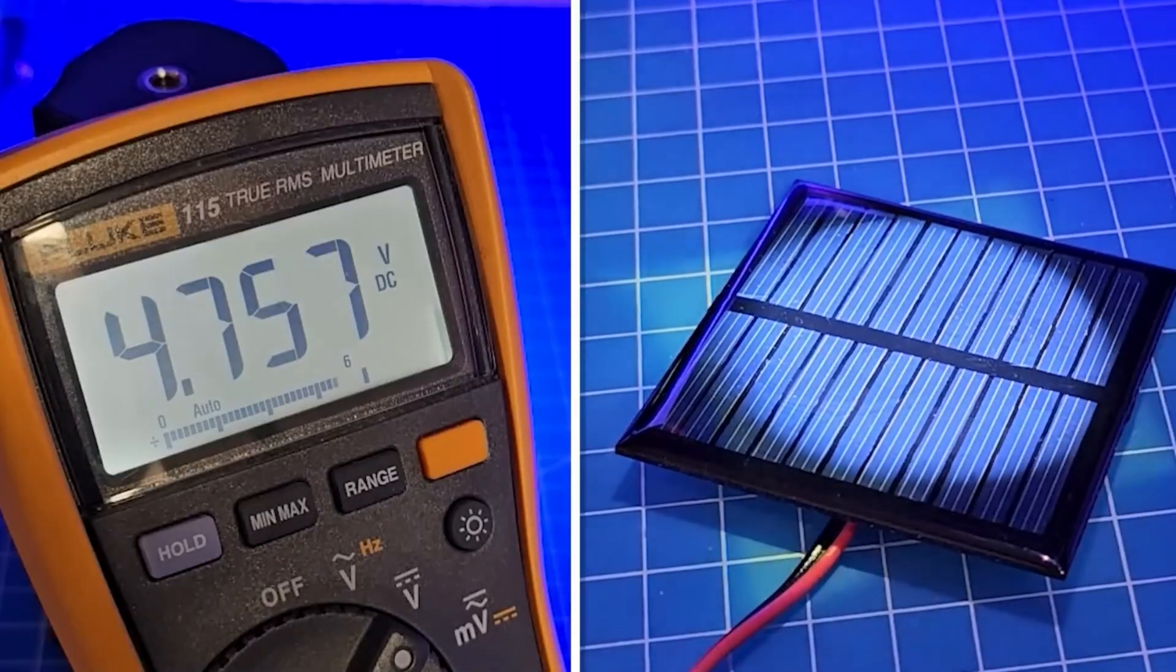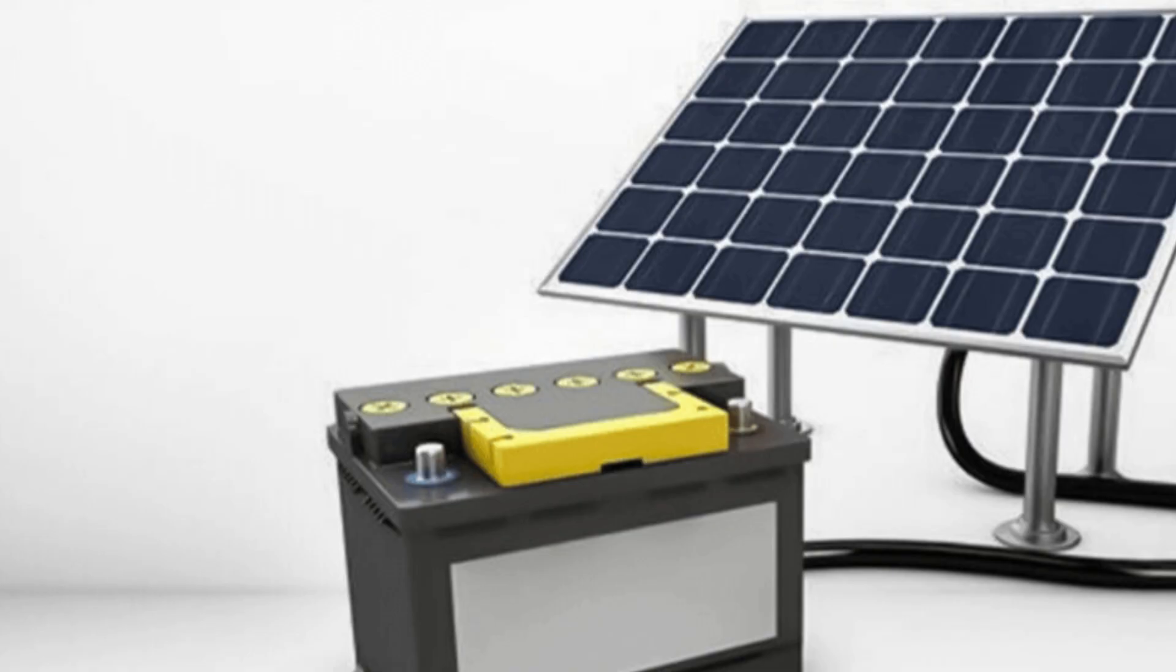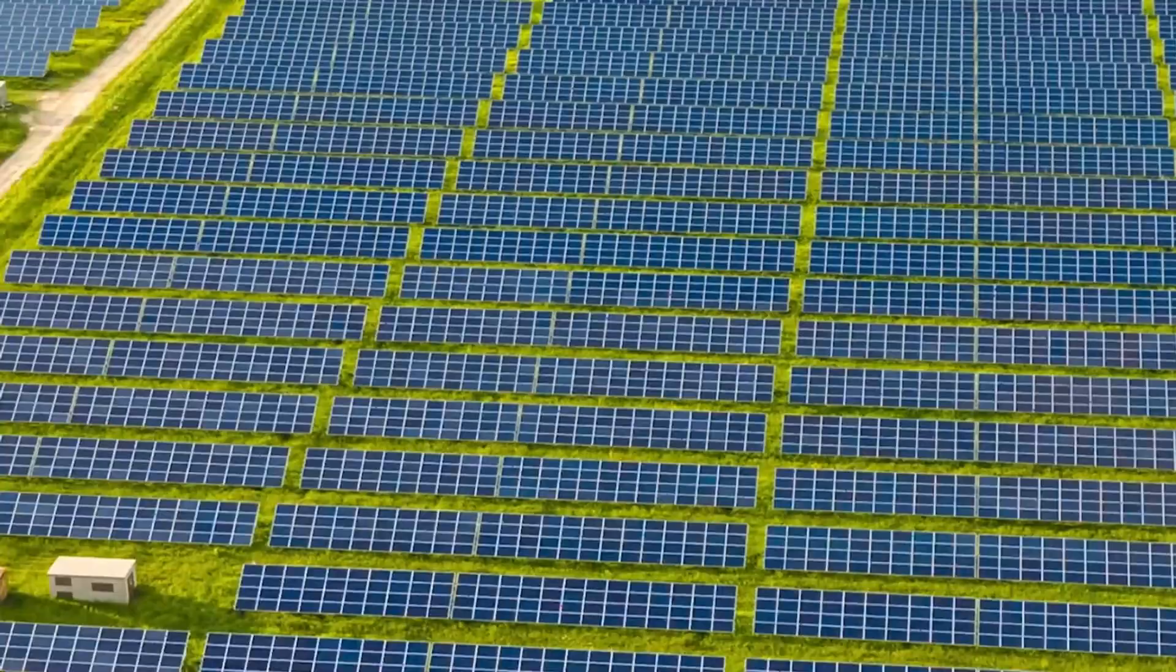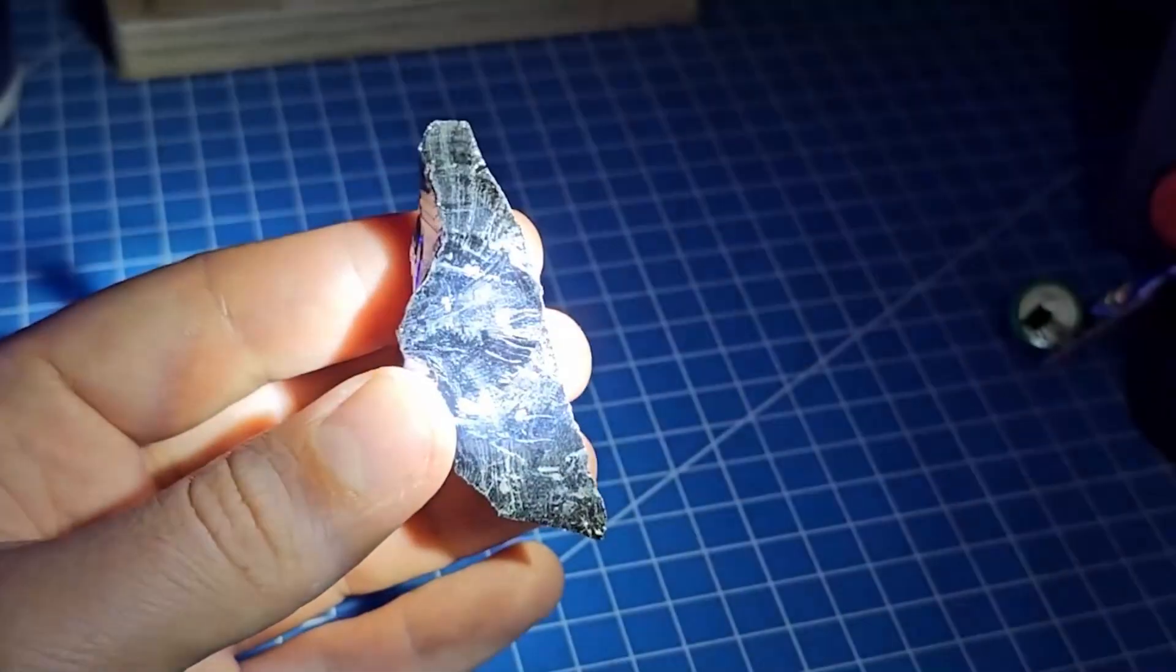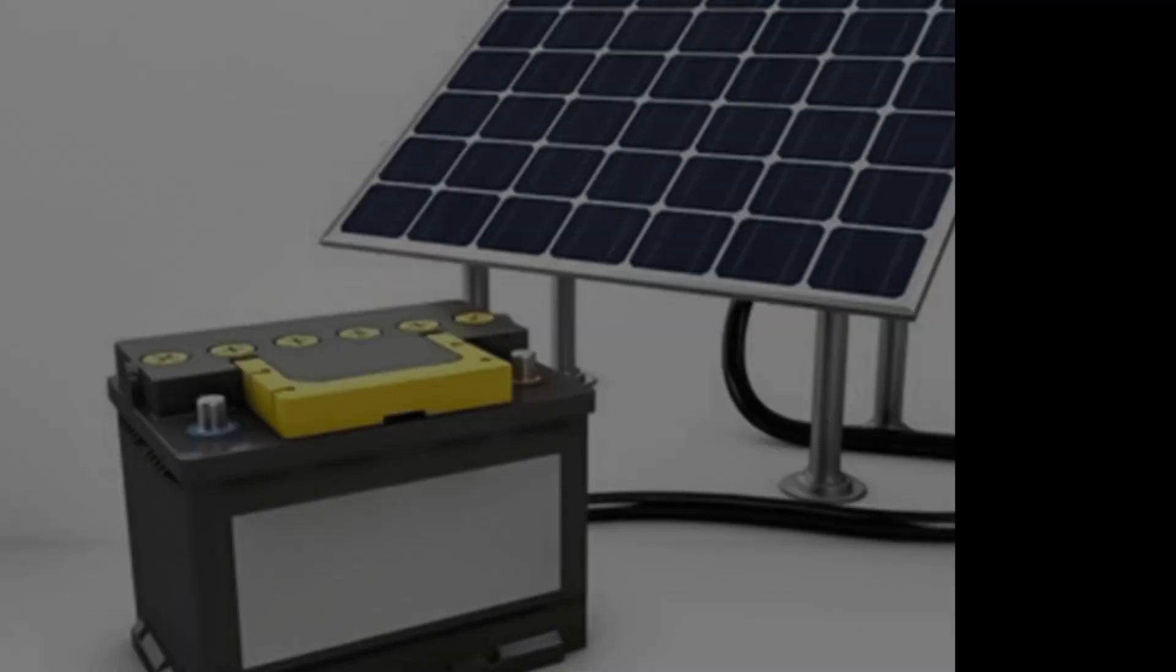There's been a lot of buzz lately around a new type of solar battery developed in Germany, but this isn't your typical solar panel with an external battery. This new material does something remarkable. It captures sunlight, stores the energy, and releases it hours later even after sunset, all in a single compact structure without needing a separate battery system.